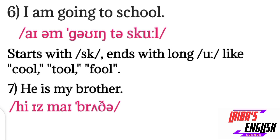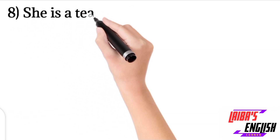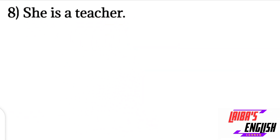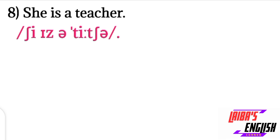Sentence seven is: He is my brother. For 'he': the H sound and a short 'ee' sound. Then 'is,' 'my.' For 'brother': B sound, R sound, then the 'uh' vowel, then the 'th' sound, and a schwa sound at the end.